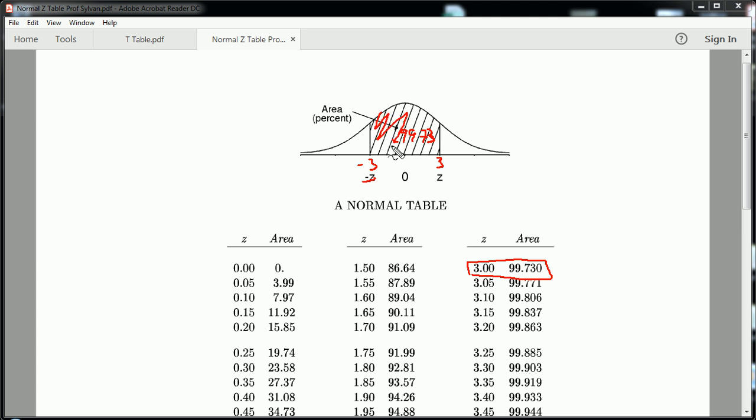And this is telling us that 99.73% of Z values are between these two numbers. In other words, the area here is 0.9973.